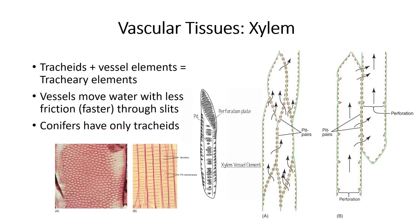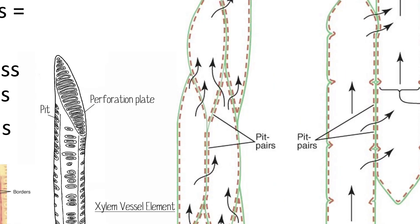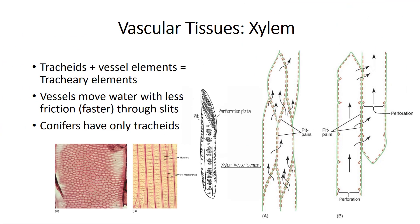Water moves between tracheids through pit membranes. Vessel elements provide a way to move water with less friction. Separations or slits form between vertically stacked vessel elements, and a stack of vessel elements is called a vessel. All plants with vascular tissues have tracheids; conifers only have tracheids, and they are also found in leaf veins of flowering plants. Only flowering plants have vessel elements, which perform long-distance water conduction in roots and stems.